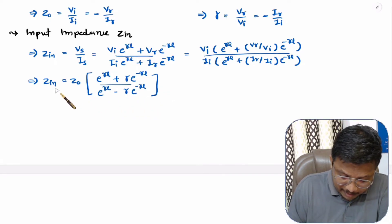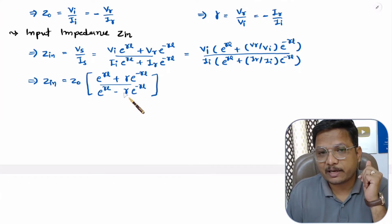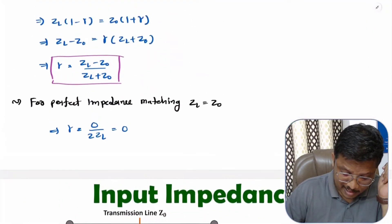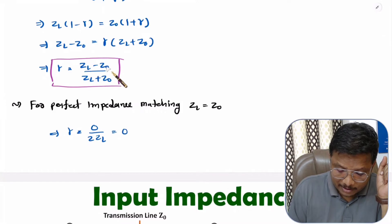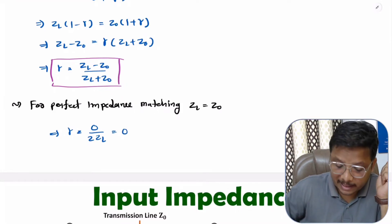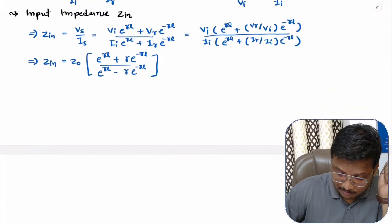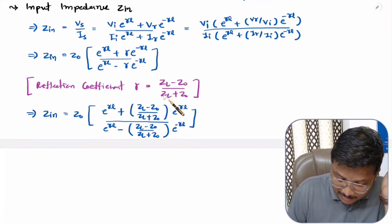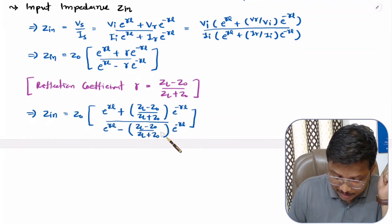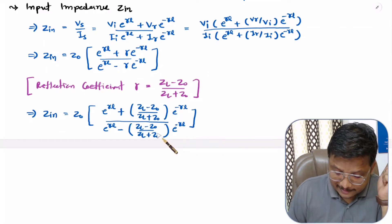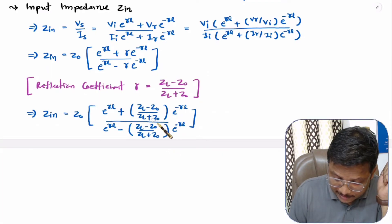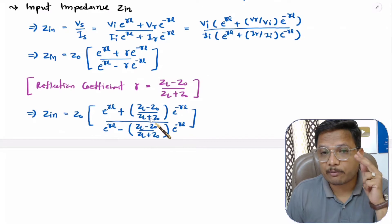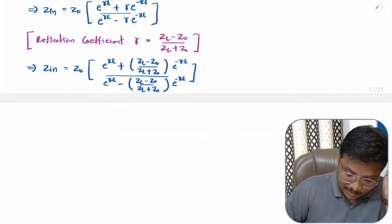We now consider this equation for further solution using the reflection coefficient formula derived in the last video: ρ equals (ZL − Z0) divided by (ZL + Z0). Substituting ρ and taking LCM, the factor (ZL + Z0) in the numerator and denominator cancels, allowing further simplification.